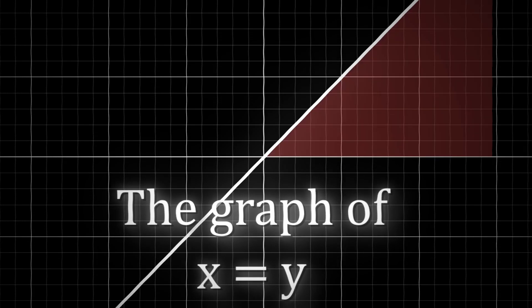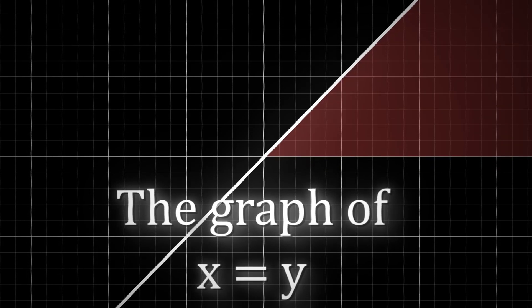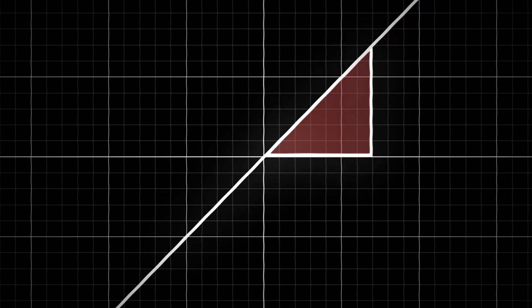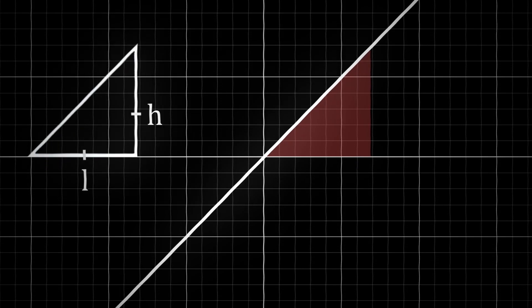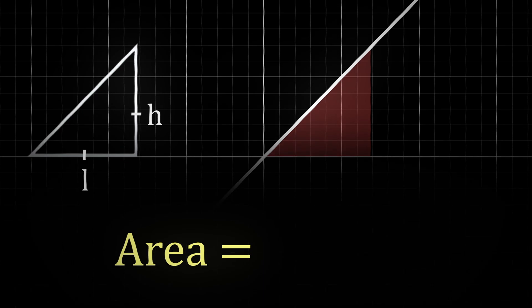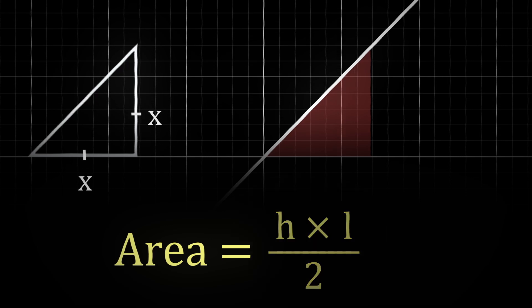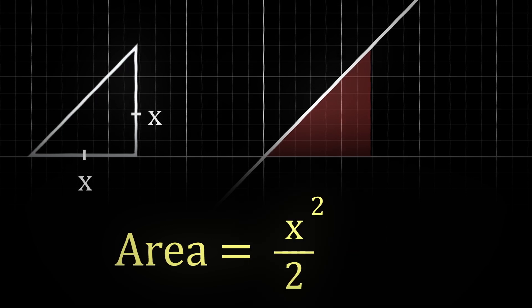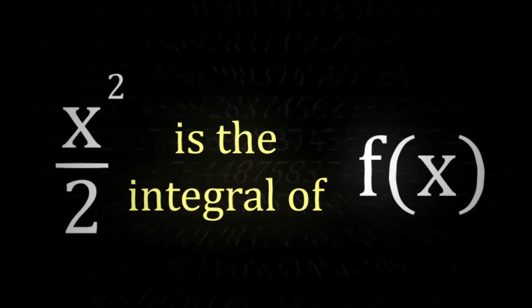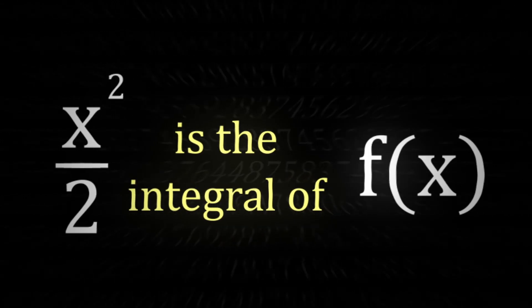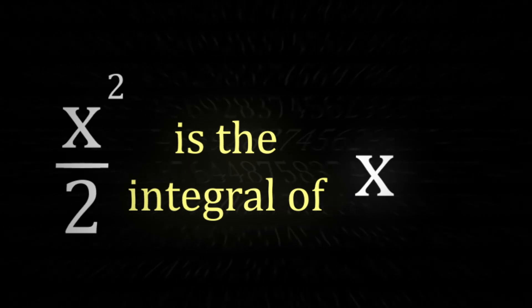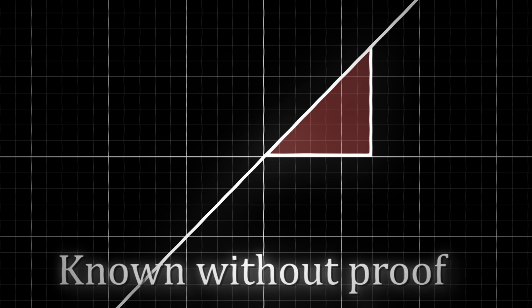Let's take an example of an area that we definitely know: the simple linear equation y equals x. If we look closer, the area underneath this line is equal to a triangle with equal height and length. We know that the area of a triangle is simply equal to half of its length times height, or in this case, half of x squared. So we can say that x squared divided by 2 is the integral of this graph, or the integral of x. At any point in the graph, its area is equal to half of x squared.